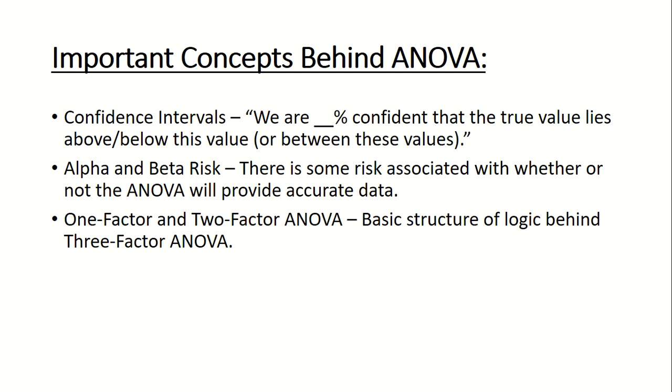There is some background knowledge that is useful to have before performing a three-factor ANOVA. Confidence intervals are calculated to show how confident we are that the true value lies either above a value, below a value, or between two values. There exists a certain risk of whether or not the ANOVA leads us to the correct conclusion. These risks are that we reject a null hypothesis that may be true, or we fail to reject a null hypothesis that is false. One and two-factor ANOVA provide the basic logic behind three-factor ANOVA and how to carry out the process.